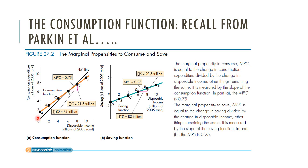The vertical intercept is represented by C-bar, or autonomous consumption. So even if income were to be zero, this is the amount of consumption that would still take place. The slope, in this instance, is 0.75 — the marginal propensity to consume. So consumption rises as income rises, but it's not a one-to-one relationship.